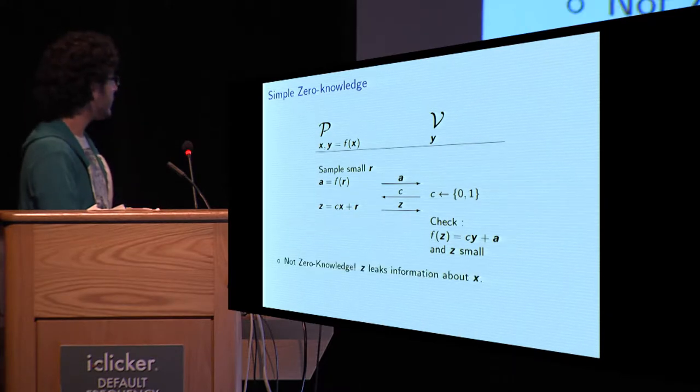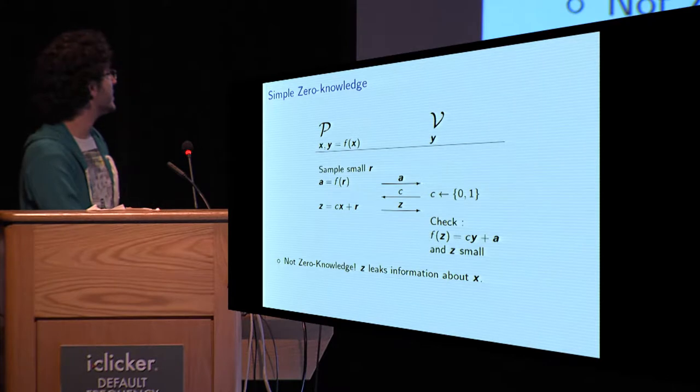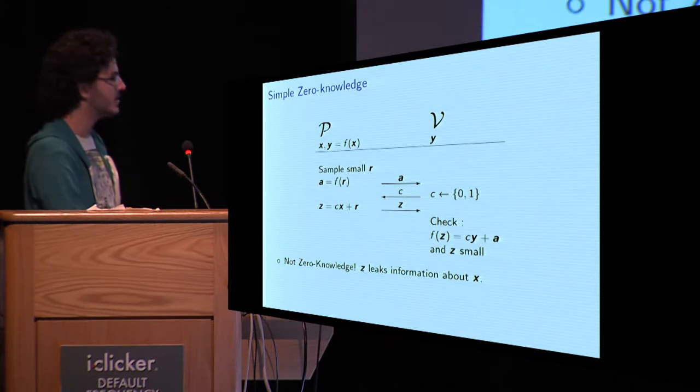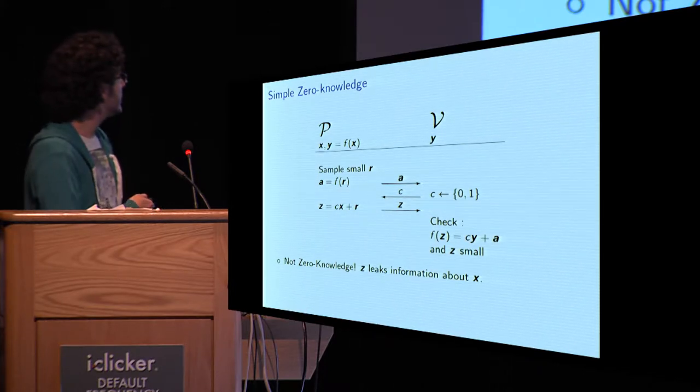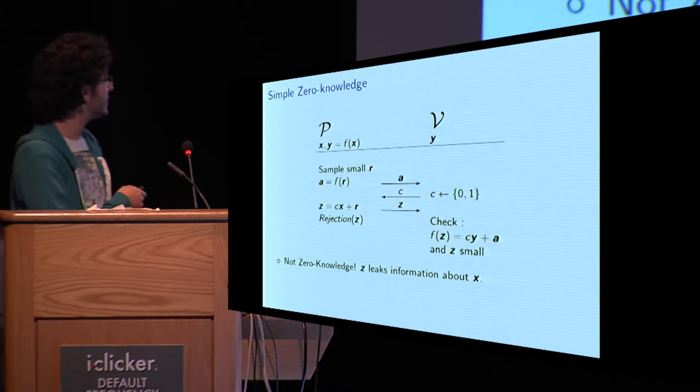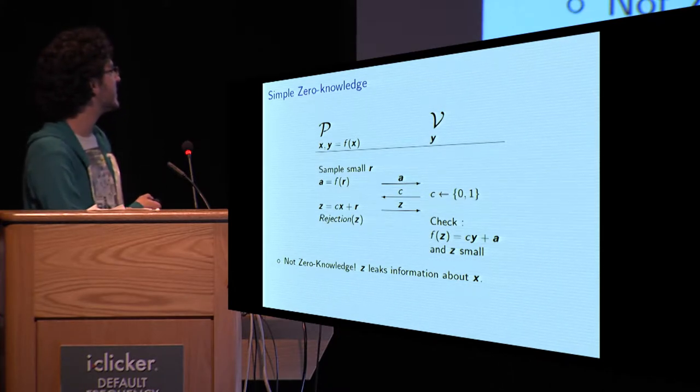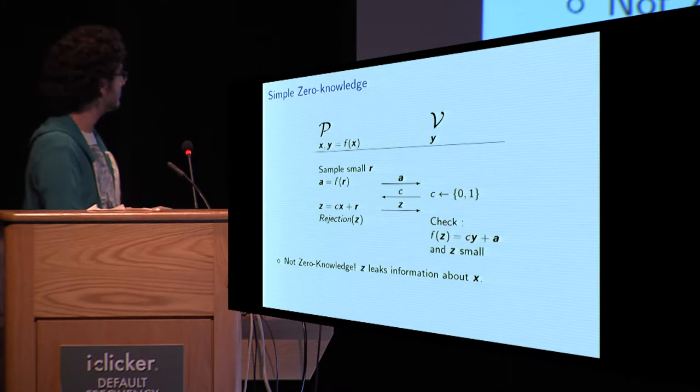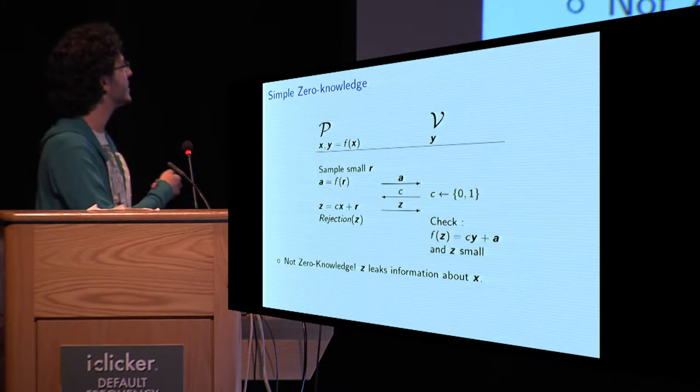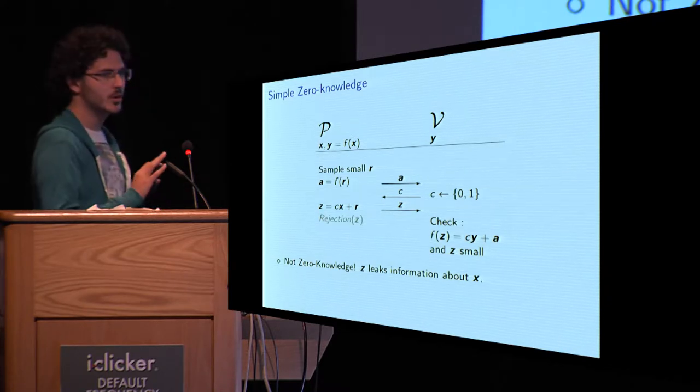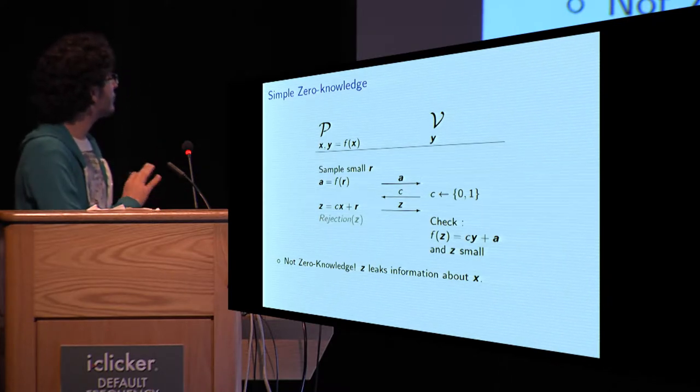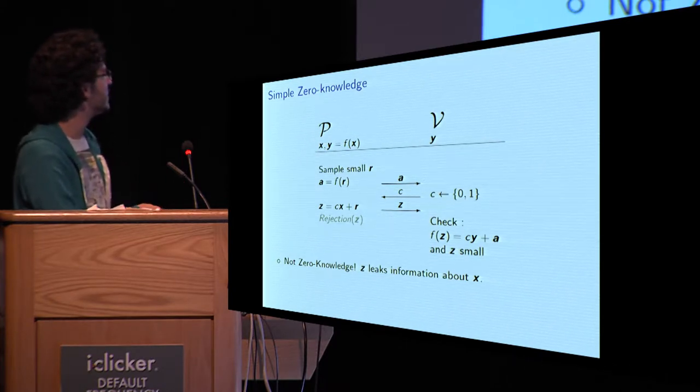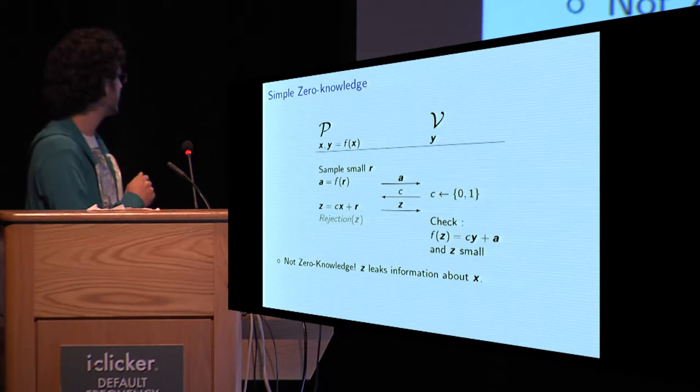So that's simple. Is that good enough? Well, no, not at all. First, because that's not zero-knowledge. Here, that depends on X, because clearly when C equals 1, it's X plus R. This leaks information about X. There is a solution for this, which is called rejection sampling. So essentially, rejection sampling states that the prover will only proceed to the third step if Z does not leak anything about X. In this talk, we will completely ignore rejection sampling because we will just assume that rejection sampling is accepted with probability 1.